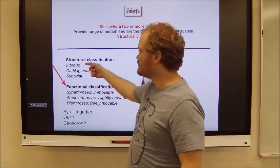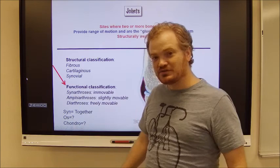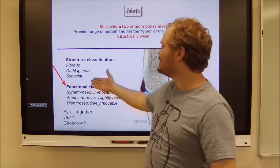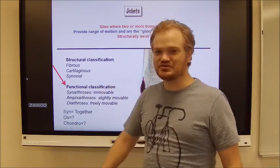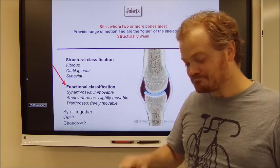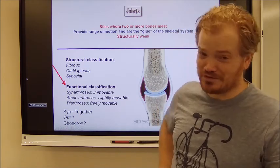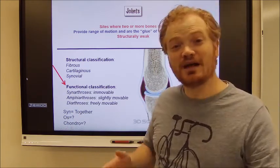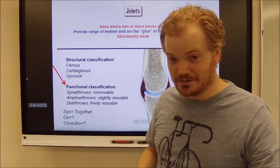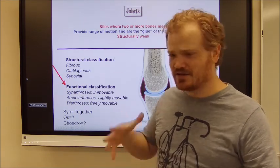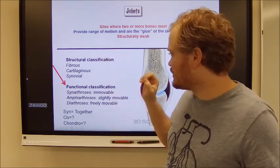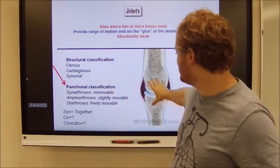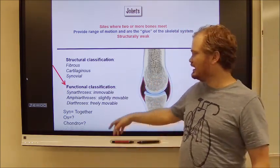There are fibrous joints — joints with fibers. There are cartilaginous joints — joints with cartilage. And then there are synovial joints, which are very complex. The fancy joints, like those in your hand — those are synovial joints, and they are way more complex than the others.